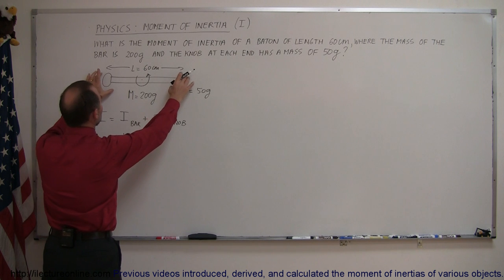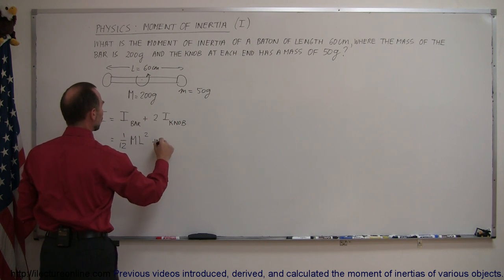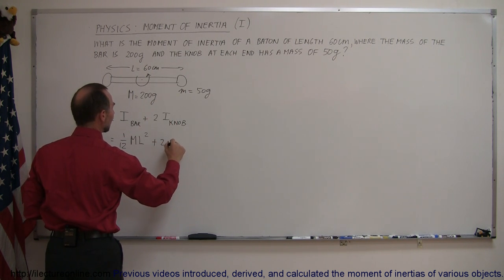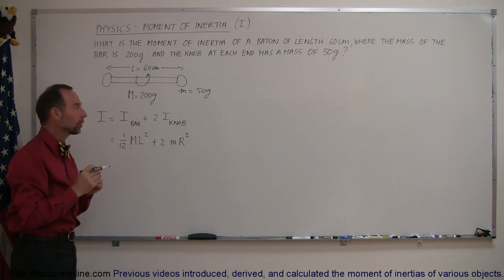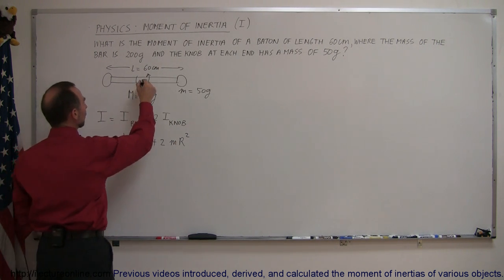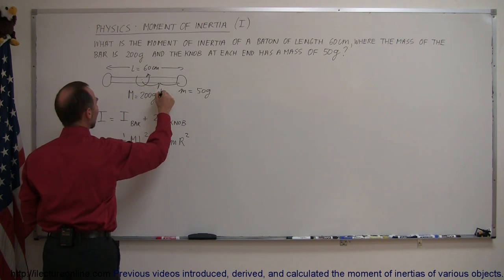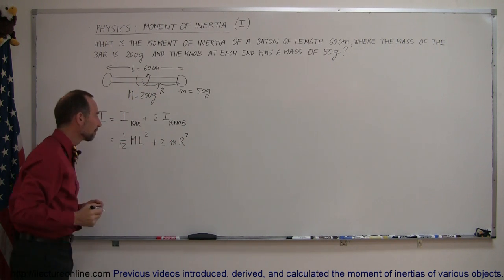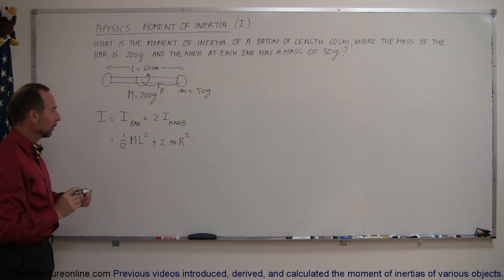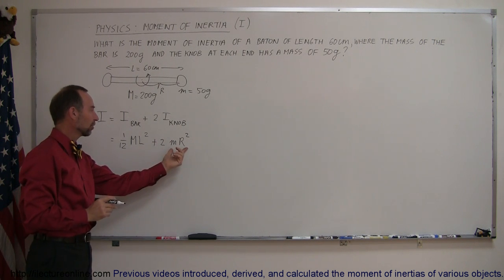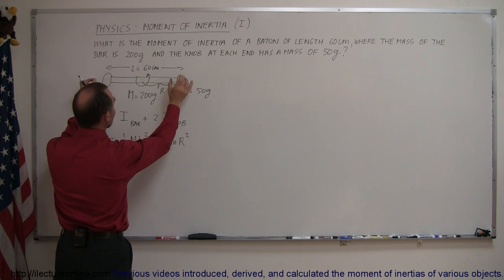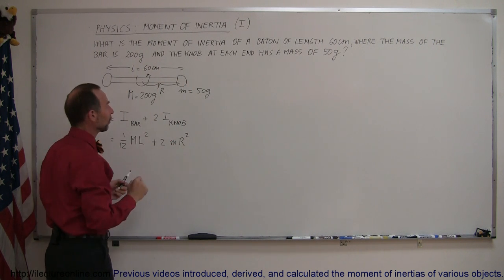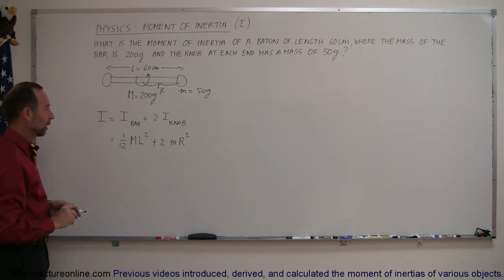Now we have the knobs on each side so that would be plus two times the mass of each knob times r squared, the radius of its rotational motion, and the radius of its rotational motion would be half the length of the baton. That's the moment of inertia of a single knob multiplied times two and again all the mass is located at the very end away from the point of rotation so therefore it's mr squared.